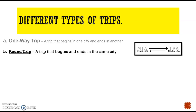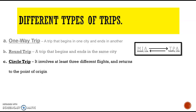So the beginning and the ending city is both Miami, USA. Circle trip: it involves at least three different flights and returns to the point of origin.